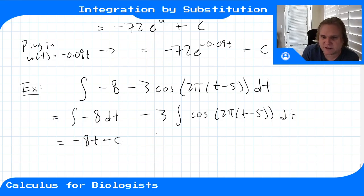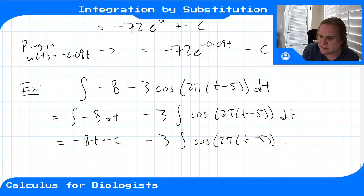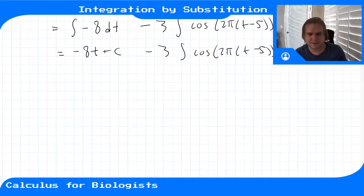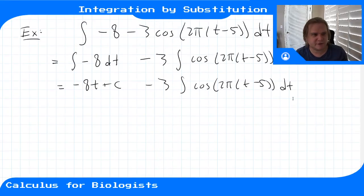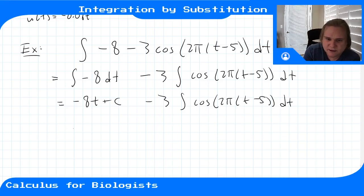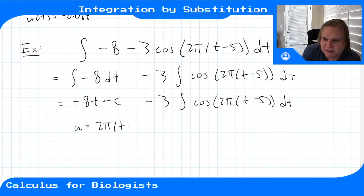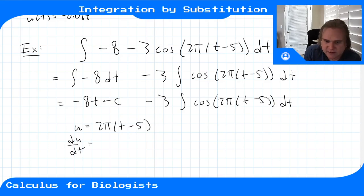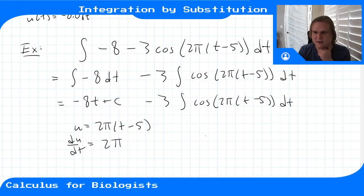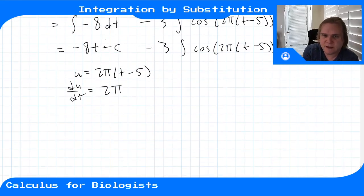The first integral gives minus 8t plus C. For the second, let u be the stuff inside the cosine: u equals 2πt minus 5. Then du/dt equals 2π, since this is a linear function with slope 2π. We don't need to change the first integral — it's already integrated.